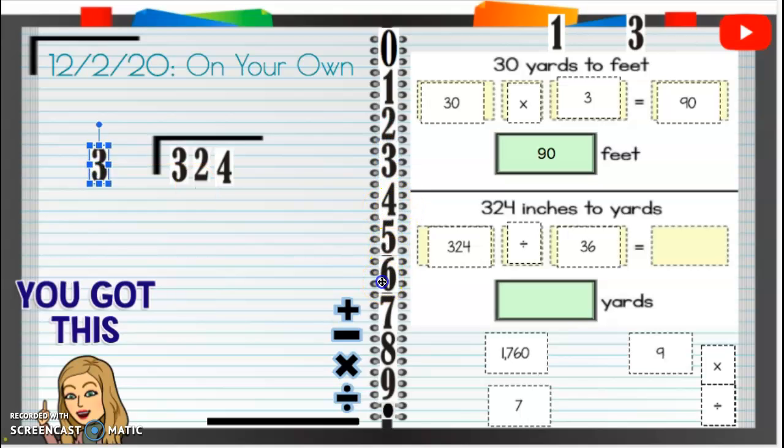Well, I know that 36 cannot go into 32. So we're just going to have to go into 324. So what we are going to do is, I guess we're going to guess and check here. 36 times what equals 324. Let's see. Let's try times 7.